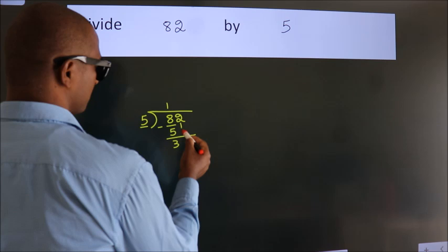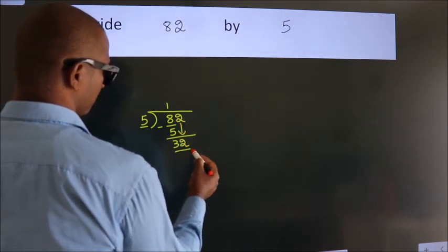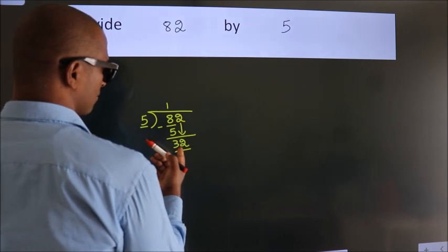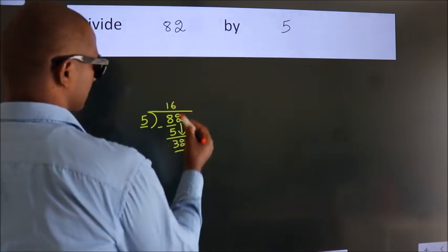After this, bring down the beside number. So, 2 down. So, 32. A number close to 32 in 5 table is 5, 6, 30.